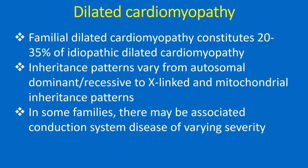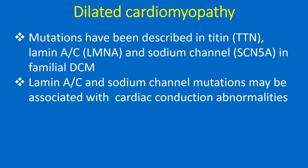Familial dilated cardiomyopathy constitutes 20-35% of idiopathic dilated cardiomyopathy. Inheritance patterns may vary from autosomal dominant and recessive to X-linked and mitochondrial inheritance patterns. In some families, there may be associated conduction system disease of varying severity. Mutations have been described in titin, lamin A/C, and sodium channel in familial DCM. Lamin A/C and sodium channel mutations may be associated with cardiac conduction abnormalities.